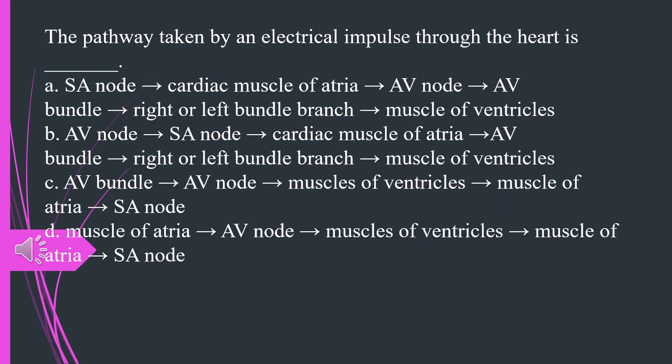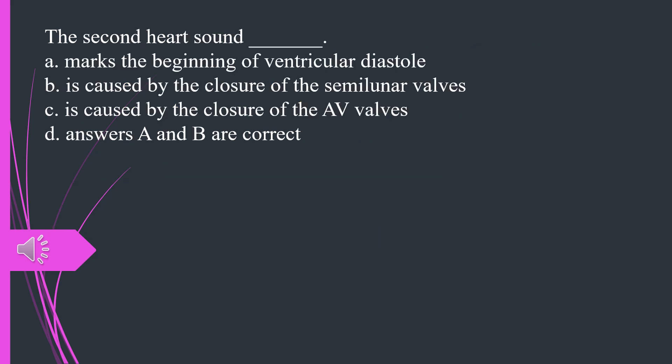The pathway taken by an electrical impulse through the heart is A. SA node to cardiac muscle of atria to AV node to AV bundle to right or left bundle branch to muscle of ventricles B. AV node to SA node to cardiac muscle of atria to AV bundle to right or left bundle branch to muscle of ventricles C. AV bundle to AV node to muscles of ventricles to muscle of atria to SA node D. Muscle of atria to AV node to muscles of ventricles to muscle of atria to SA node. The answer is A.